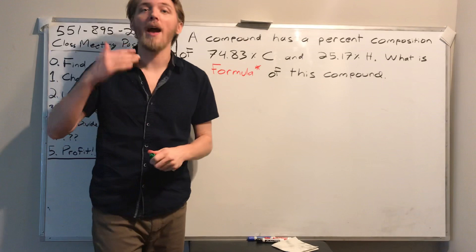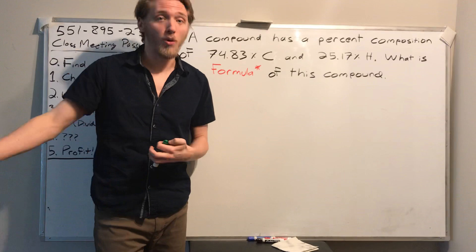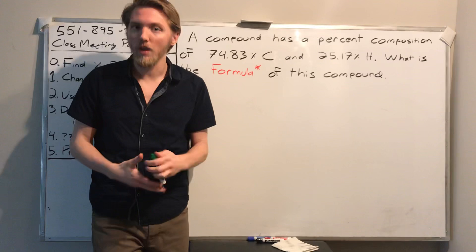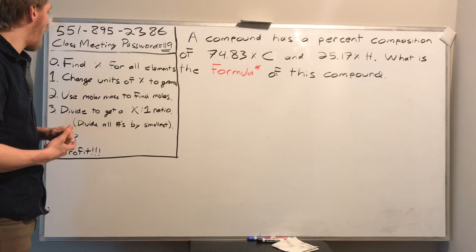Remember, a formula is just showing how many of each atom are in a compound. We've been writing formulas this whole time — ionic ones we call formula units, covalent ones we call molecules. So this is what we've been trying to do: find the formula.